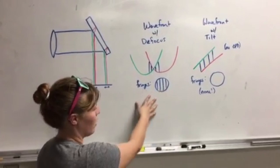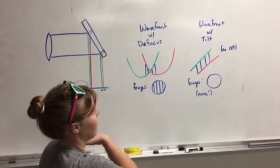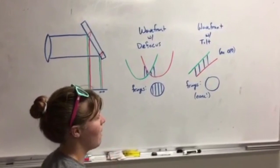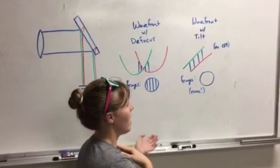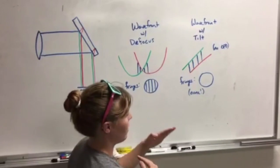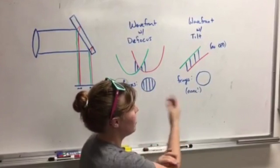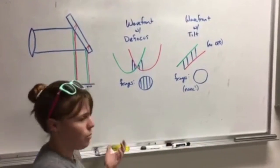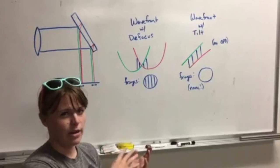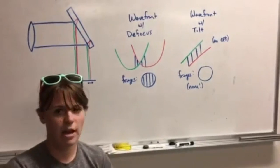So for defocus, you'll see straight fringes that become more separated as you have less defocus. But for tilt, if you have tilt in your system, that wavefront is basically just a straight line. So when you have the separated wavefront, there's actually no optical path difference, so you don't see any fringes. So if you want to see tilt, you have to add defocus into the system as you're adding tilt, and you'll see the fringes move. But with no defocus, you won't see anything.